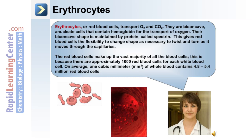Erythrocytes, or red blood cells, transport oxygen and carbon dioxide. They are biconcave cells without a nucleus. They contain hemoglobin for the transport of oxygen, and their biconcave shape is maintained by spectrin, which allows the cells to be flexible — to twist and turn as needed, passing through the capillaries. The red blood cells make up the vast majority of all blood cells; there are approximately 1,000 red blood cells for each white blood cell, and on average, 1 cubic millimeter of whole blood contains between 4.8 and 5.4 million.